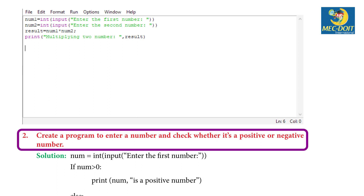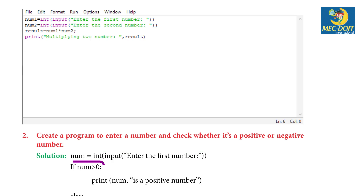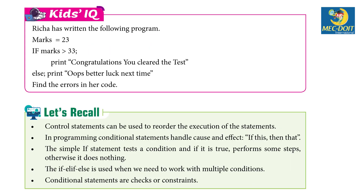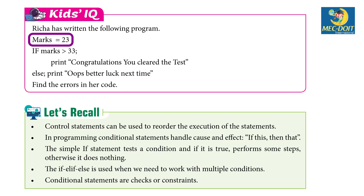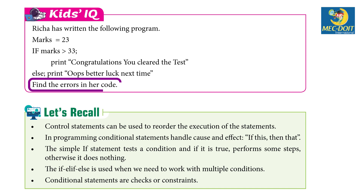Example 2: create a program to enter a number and check whether it is positive or negative. Solution: number = int(input('Enter the first number: ')). If number < 0: print('number is a positive number'); else: print('number is a negative number'). Error-finding activity: Rita has written a program — marks = 23; if marks < 33: print('Congratulations, you cleared the test'); else: print('Oops, better luck next time'). Find the errors in the code.